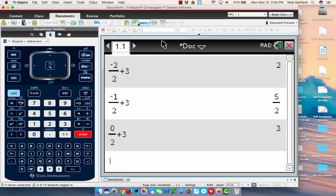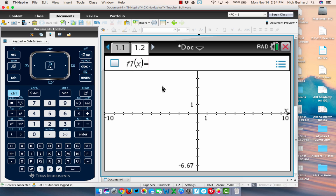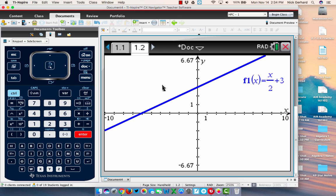The other thing that we can do is we can graph it. So, press control, dock, and add graphs. And then you just type it in. So, x divided by 2 plus 3 is our equation. Go ahead and press enter and you'll see that it gives you this line, this nice linear function.